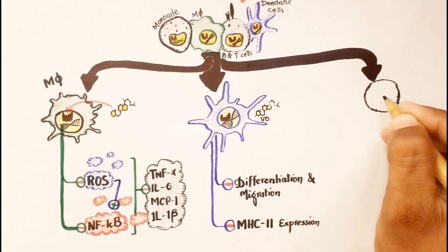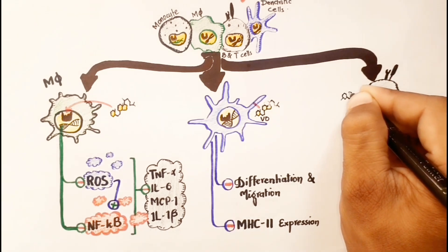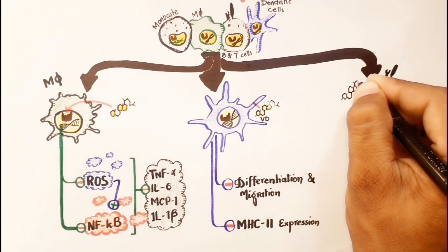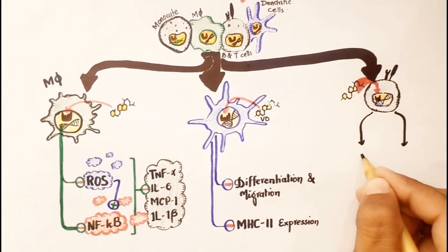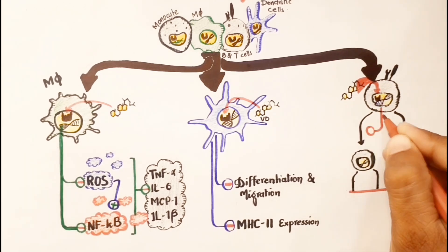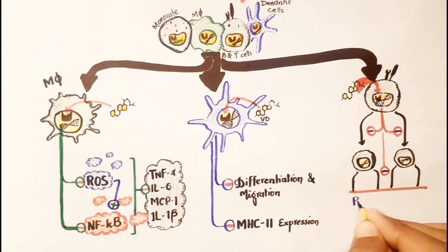Furthermore, vitamin D can also make a complex with vitamin D receptor in the nucleus of T lymphocytes, leading to suppression of its proliferation.